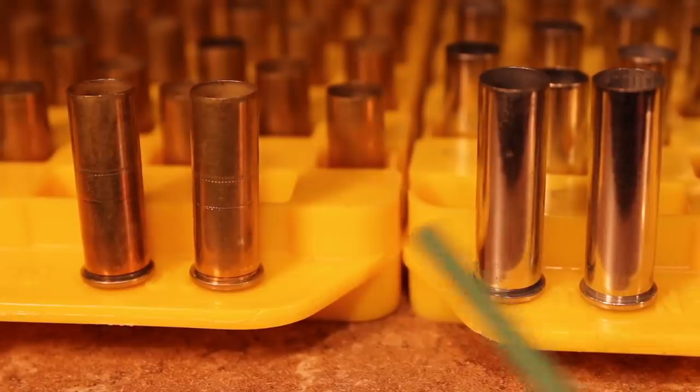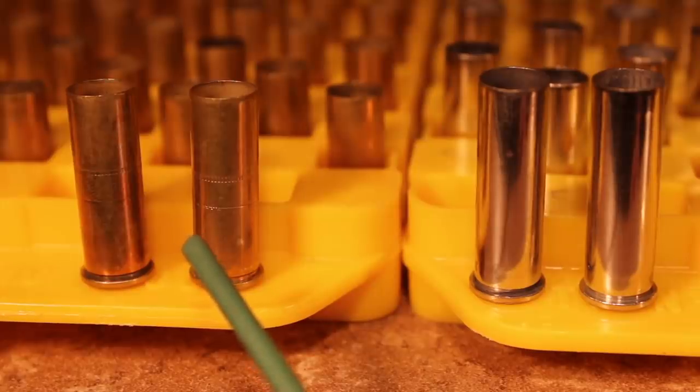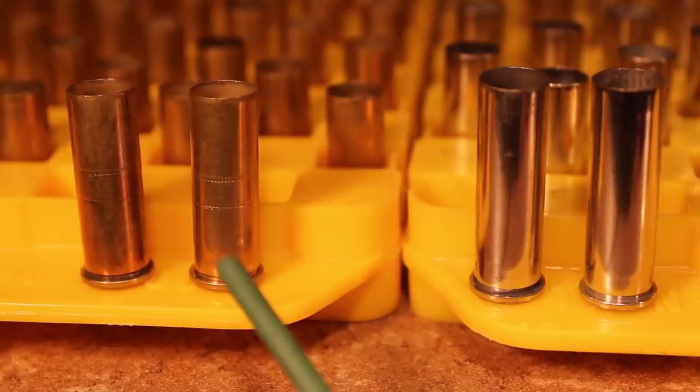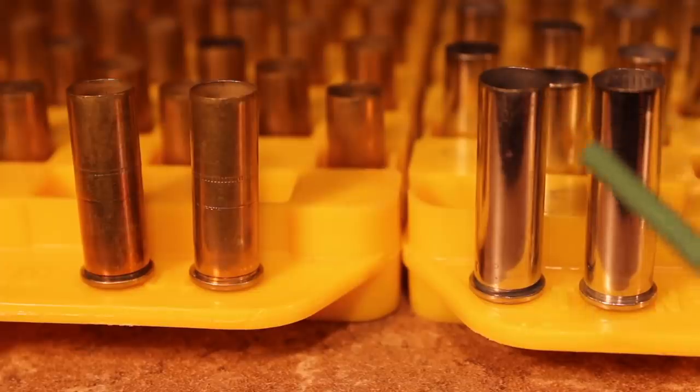Well as you know, the .38 Special was introduced in 1898 as a black powder cartridge originally. It didn't take long for smokeless to go into the .38 Special. But then in 1935, the case was lengthened and turned into the .357 Magnum. Much more powerful ammunition.